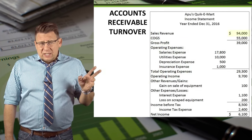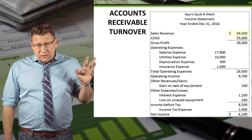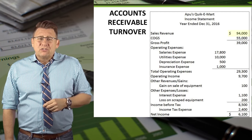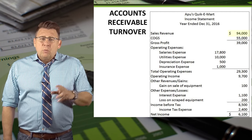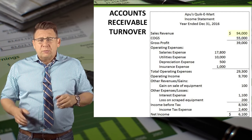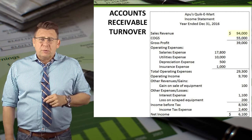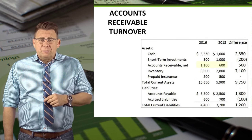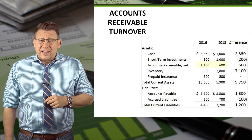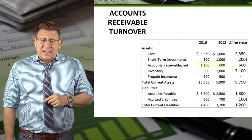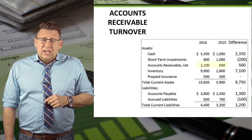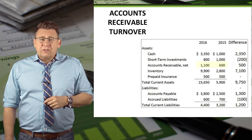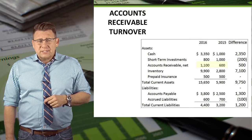Here is an income statement from a sample company. For 2016, I've highlighted net sales revenue and will use that information to determine the accounts receivable turnover. Additionally, we need some information from the current assets section of the balance sheet. I've highlighted 2 years worth of net accounts receivable balances.